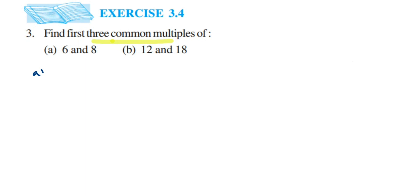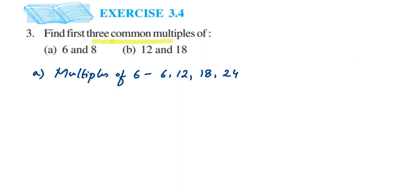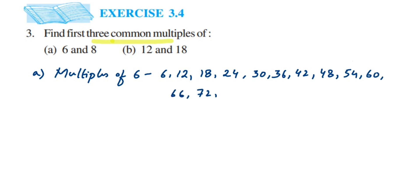Let's start with the first question. I am going to write the multiples of 6 and then find the common multiples. Multiples of 6: 6, 12, 18, 24, 30, 36, 42, 48, 54, 60, 66, 72. You can stop at 60 or continue — it's completely up to you. I have taken up to 72.